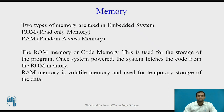Memory. There are two types of memories used in embedded systems: ROM (Read Only Memory) and RAM (Random Access Memory). ROM is also called code memory because the fixed or permanent program to be embedded into the system is stored in ROM. Once the system is powered, it fetches the code from ROM and executes it.